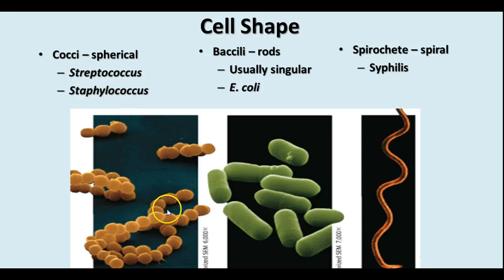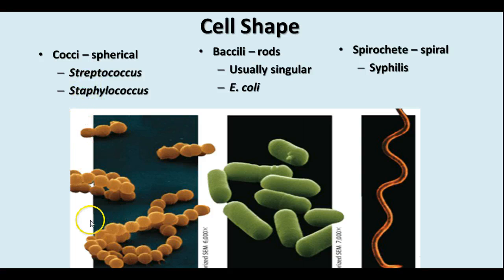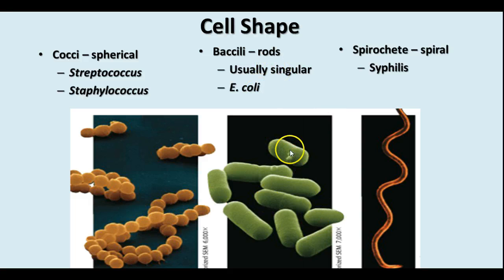Streptococcus and staphylococcus are made of the coccus shape. Staphylo refers to a cluster, like a cluster of grapes, and strepto refers to a chain. The bacilli are rod-shaped — usually singular, although they can occur in pairs or in chains, giving us diplobacillus and streptobacillus.